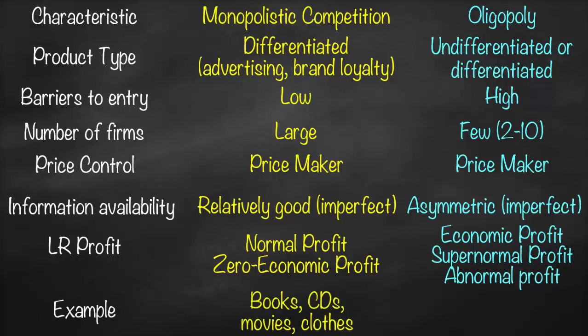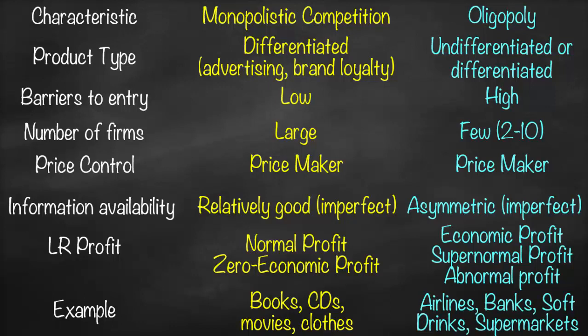Some examples of monopolistic competition are books, CDs, movies, and clothes, because they have differences and there are many sellers. For oligopoly, examples include airlines, banks, soft drinks such as Coca-Cola and Pepsi, and large supermarkets — all of these are examples of oligopoly.